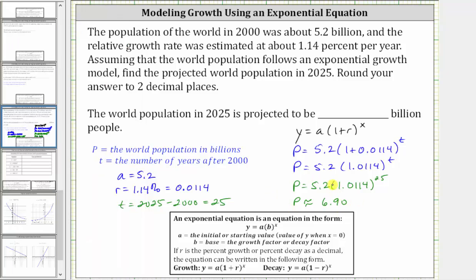And remember, p is in billions, which means the world population in 2025 is projected to be 6.90 billion people, according to this model.